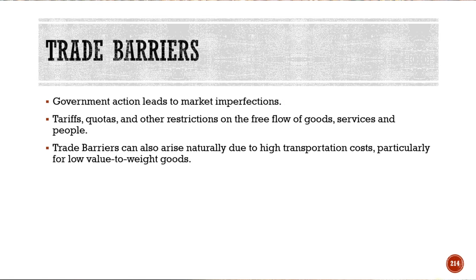Because trade barriers are such a big part, it almost always comes down to government actions that lead to market imperfections, making it very challenging for businesses to have an outlook on what to expect going forward and plan for cash flows. Tariffs, quotas, and other restrictions on the free flow of goods, services, people, and money make it very challenging. Sometimes trade barriers can rise totally naturally — for instance, when oil prices increase significantly, transportation becomes very expensive.